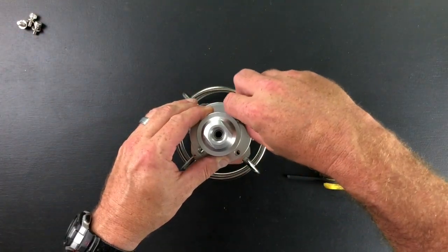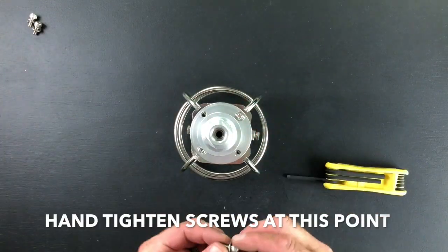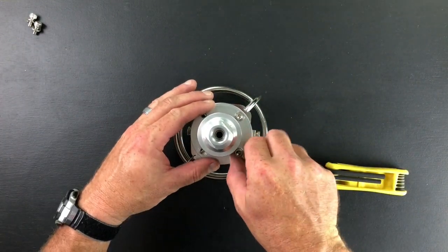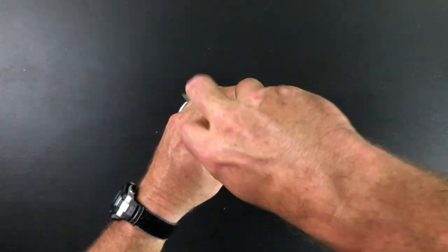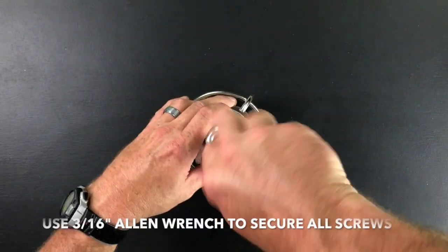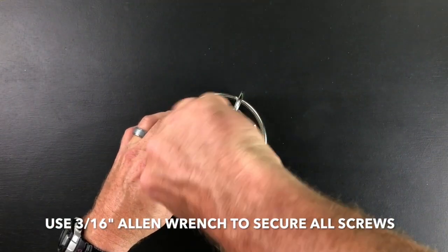Then simply begin tightening down each of the four Allen screws by hand. Use your 3/16 Allen wrench to tighten down all screws, ensuring you're using the lock washers provided.